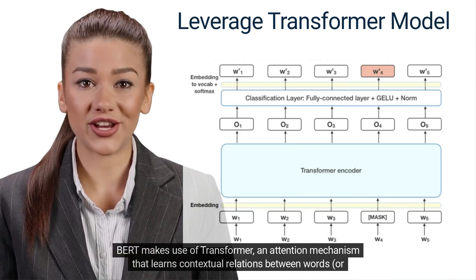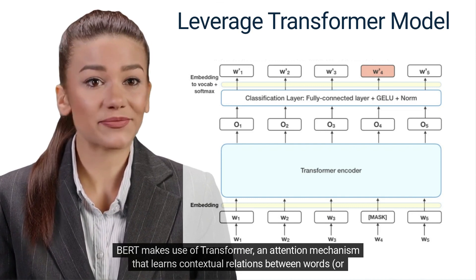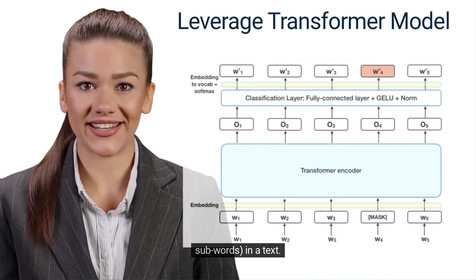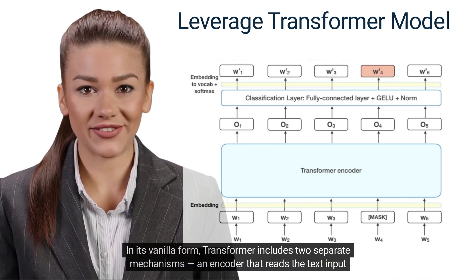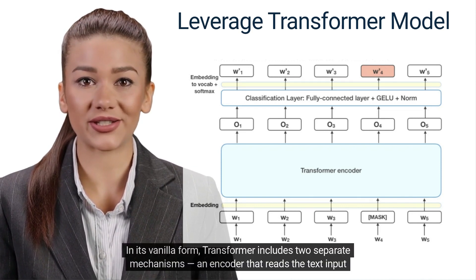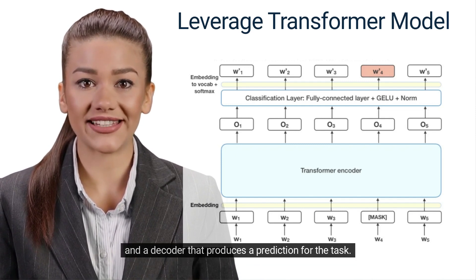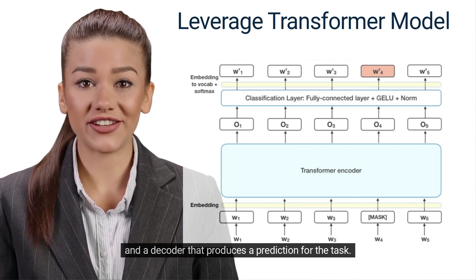BERT makes use of Transformer, an attention mechanism that learns contextual relations between words or subwords in a text. In its vanilla form, Transformer includes two separate mechanisms: an encoder that reads the text input and a decoder that produces a prediction for the task.